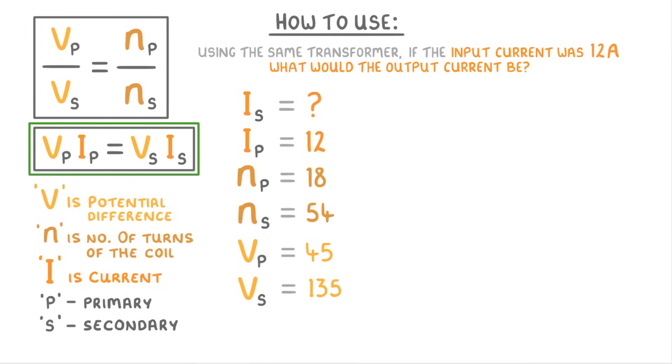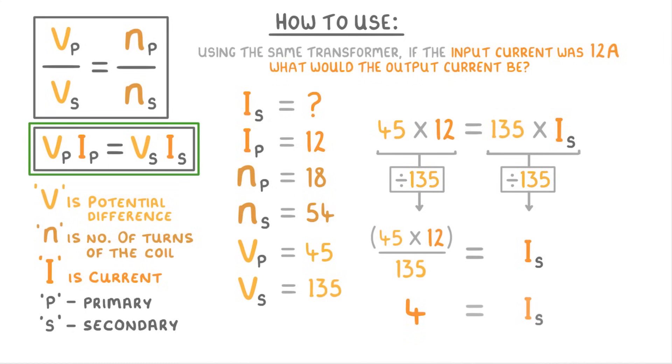Which, if we plug in our values, gives us 45 times 12 equals 135 times Is. Then we can divide both sides by 135 to get 45 times 12 over 135 equals Is. And then we put that into our calculator to find that 4 equals Is. So our output current is 4 amps.